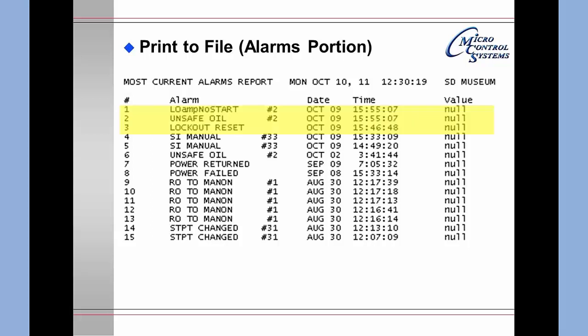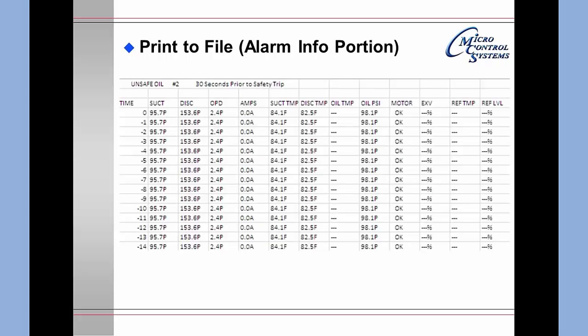The first alarm is the low amp no start, meaning we fired our relay but the compressor never started. At the same time there was an unsafe oil alarm, as the timing was exactly the same for both alarms, and then the unit had been locked out with a reset about 10 seconds before. Going down to alarm number 6 you will see that an unsafe oil had occurred on circuit 2 about a week prior at about 3:41 in the morning. This is an information printout from an alarm, showing only the first 15 seconds of the available 30 seconds of data.